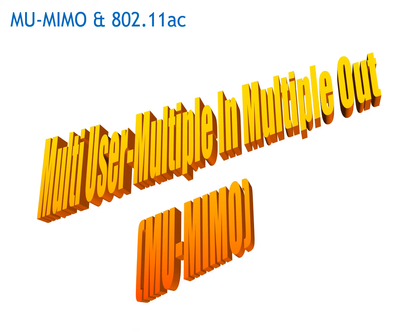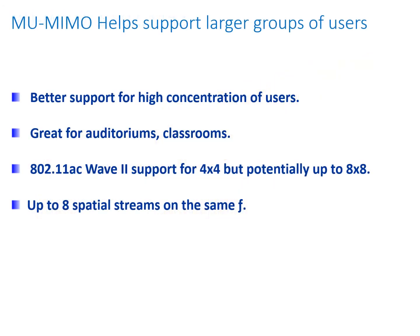MU-MIMO stands for Multi-User Multiple In Multiple Out. MU-MIMO helps support larger groups of users. It's going to basically increase the spectral efficiency within a Wi-Fi network, giving us better support for high concentrations of users in, for example, auditoriums, classrooms, and at sporting events.